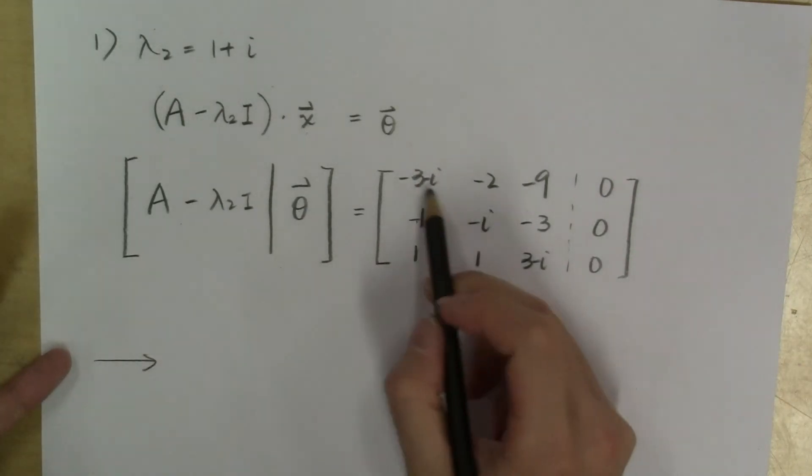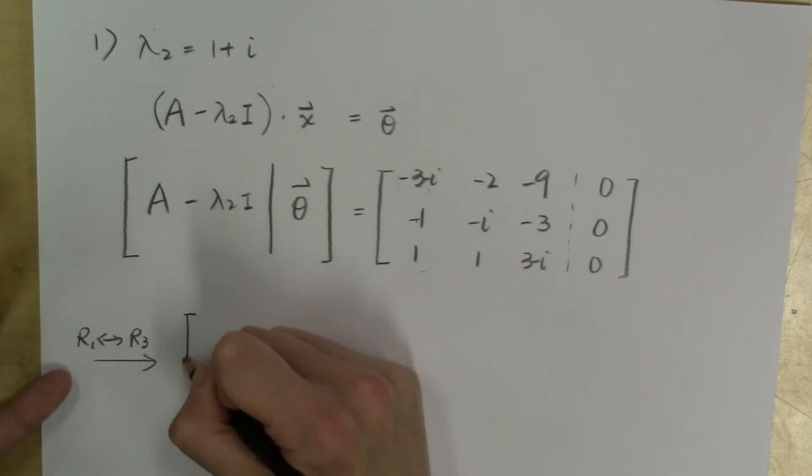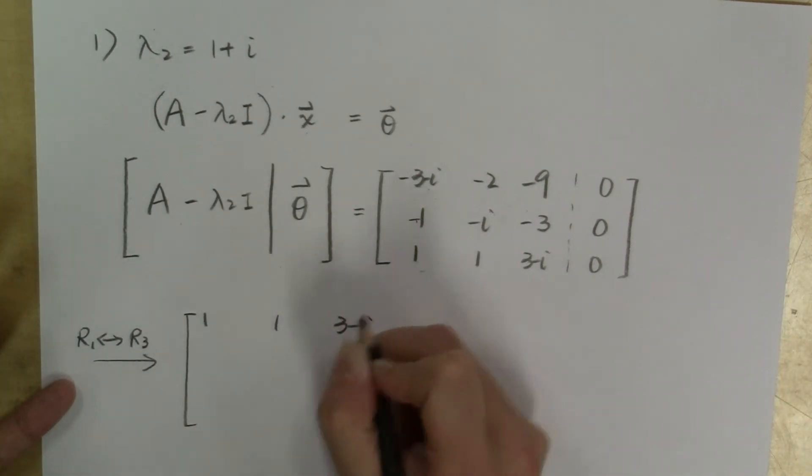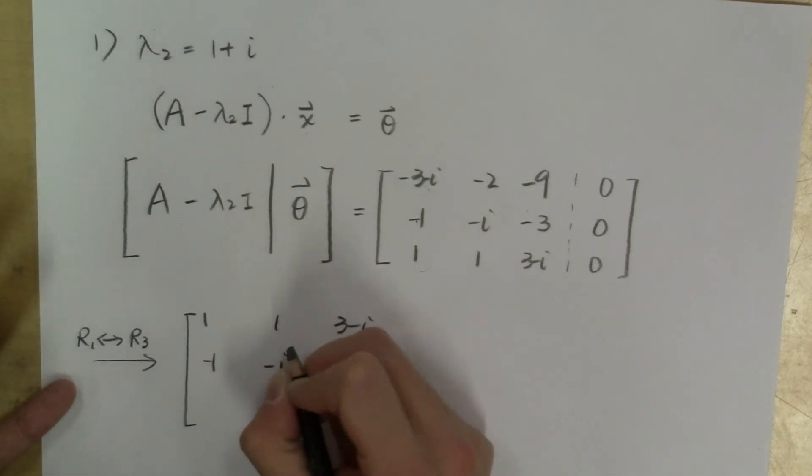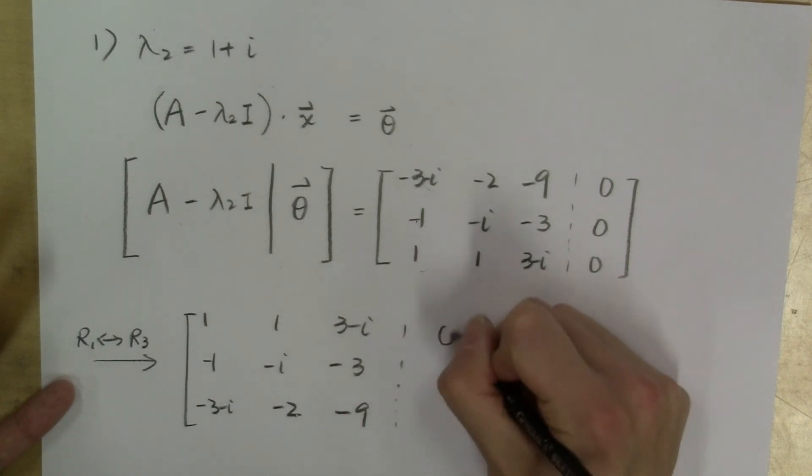And in this case, I would switch the first row with the third row because the third row has a one there, which makes calculations much easier. So after switching that, I have: 1, 1, 3 minus i; negative 1, negative i, negative 3; negative 3 minus i, negative 2, negative 9. And the right hand side vector is 0, 0, 0.